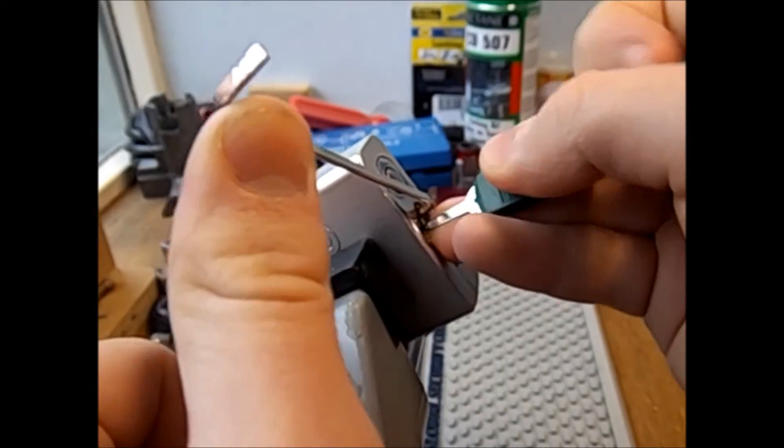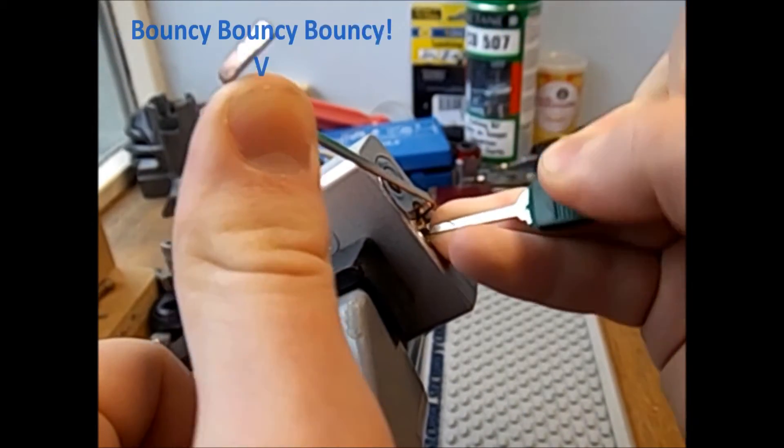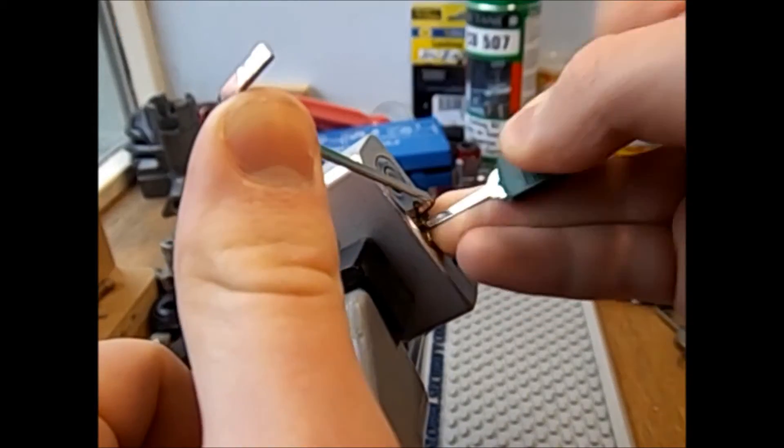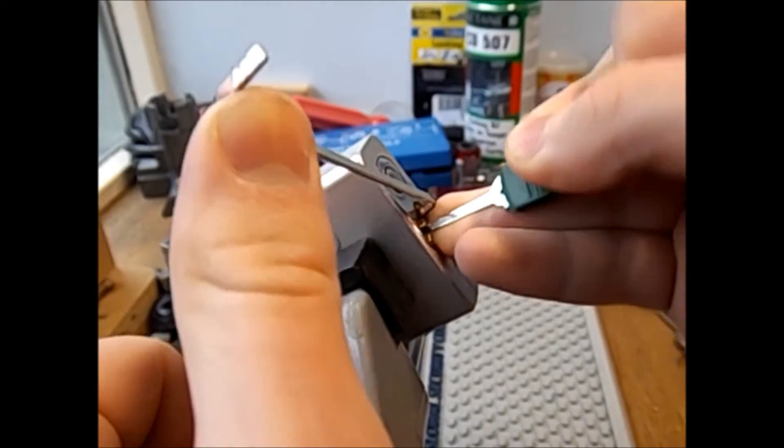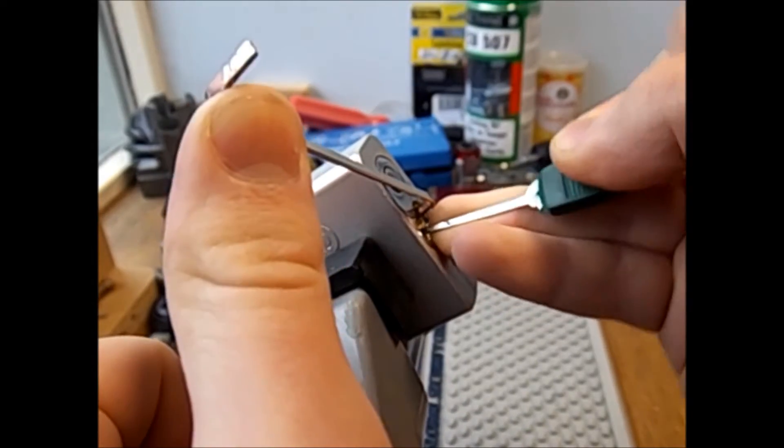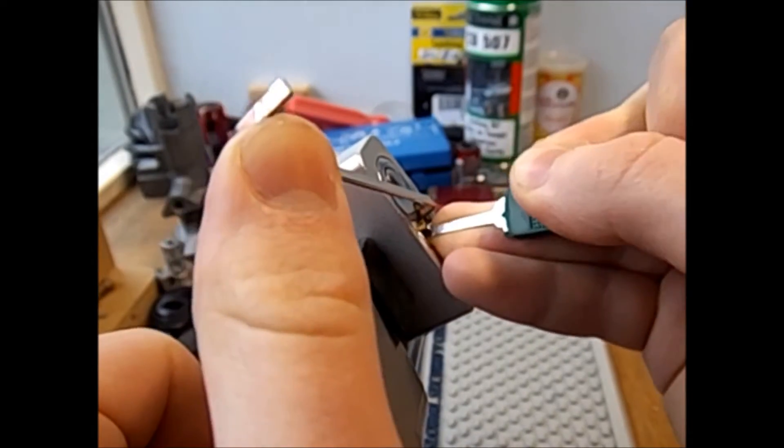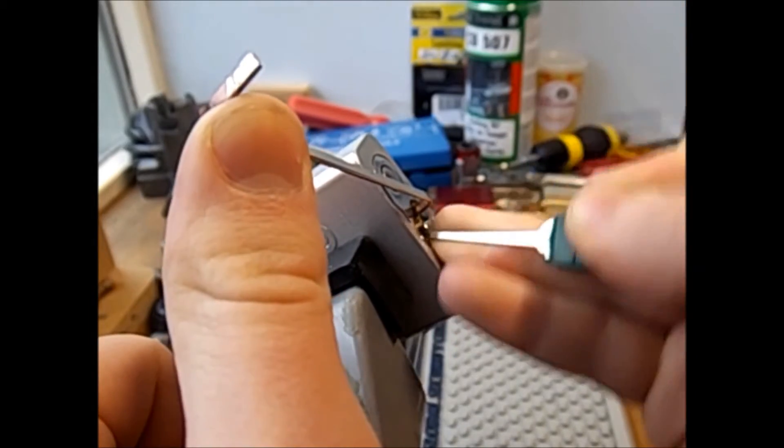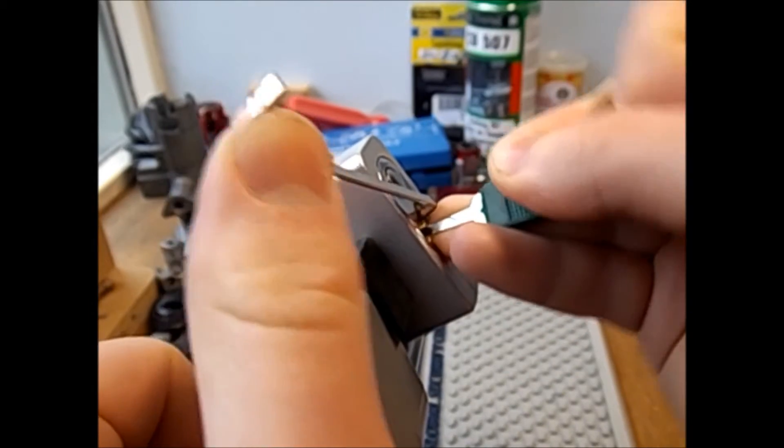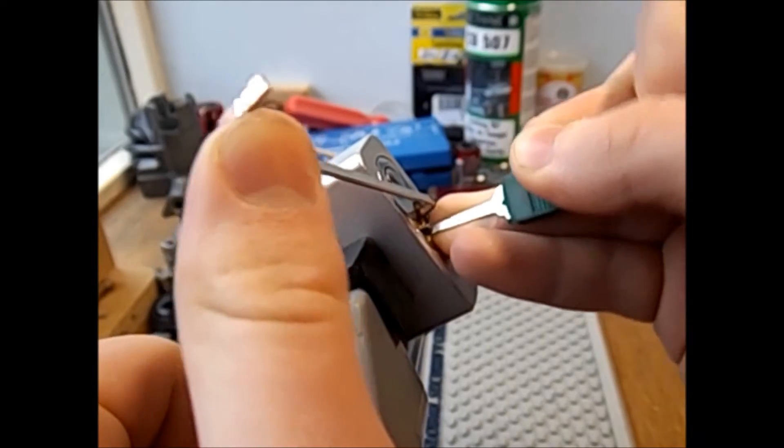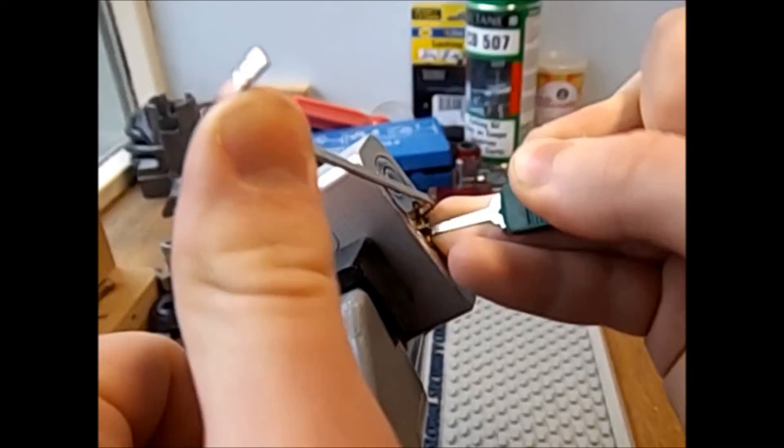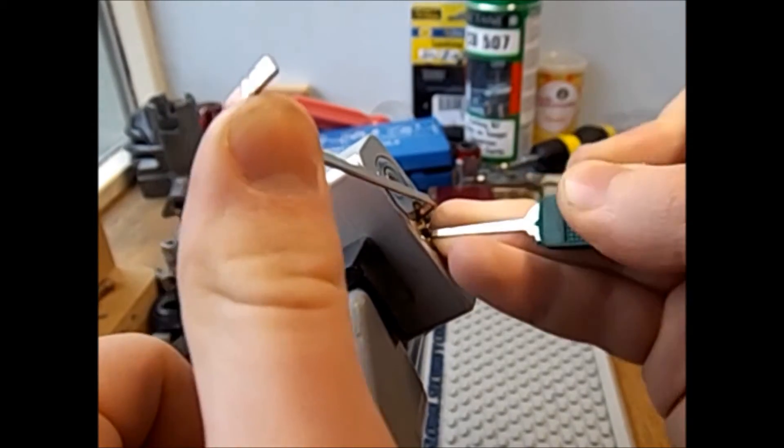I'm going to go in with a Eurohook and set some of those lower pins. Going nice and light on the tension. But obviously heavy enough to overcome the spring on the core. And I can definitely feel that there's some sort of spool type pins in here.